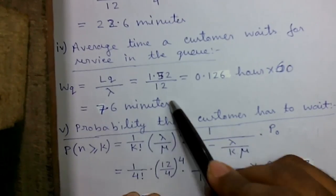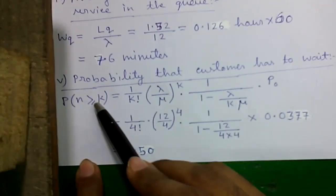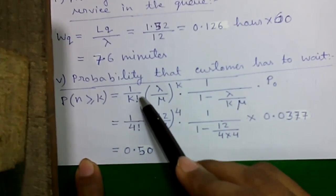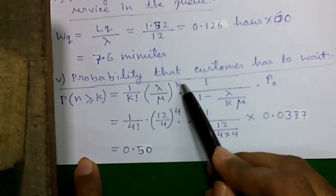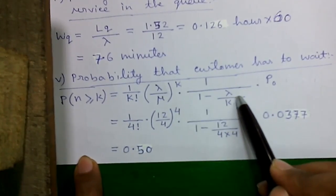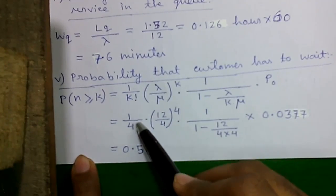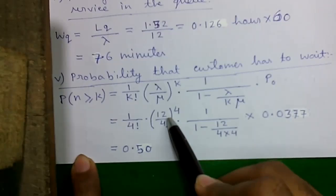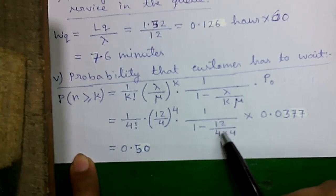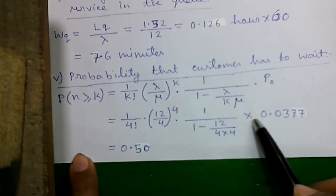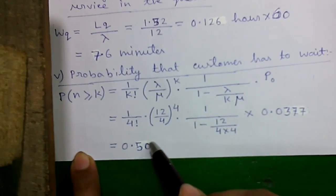Probability that a customer has to wait: P(n ≥ k) = [1/k! × (λ/μ)^k × 1/(1 − λ/(kμ))] × P0 = [1/4! × (12/4)^4 × 1/(1 − 12/16)] × 0.0377 = 0.50. This means 50% of customers have to wait for service.